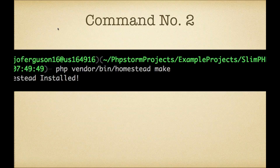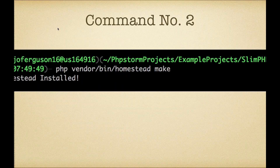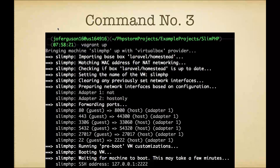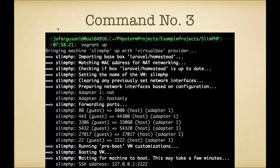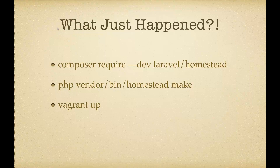Command number two: we're going to run php vendor/bin/homestead make. This is a binary application that Homestead provides, and it installs everything into the root of our project that we need to spin up a new Vagrant environment. Command number three: we can just run Vagrant up from here, and this will bring up our SlimPHP VM with our VirtualBox provider. This assumes you've previously watched the first video, that you have VirtualBox or some other provider installed, and you have the Homestead box already installed. We're forwarding ports just like in the previous video, and we're doing this per project.